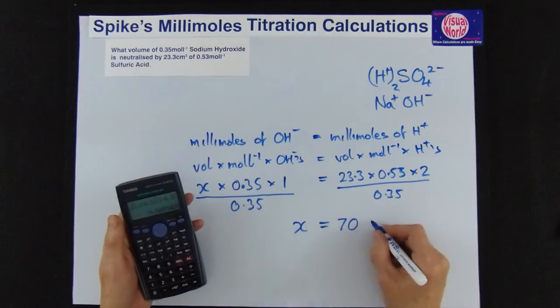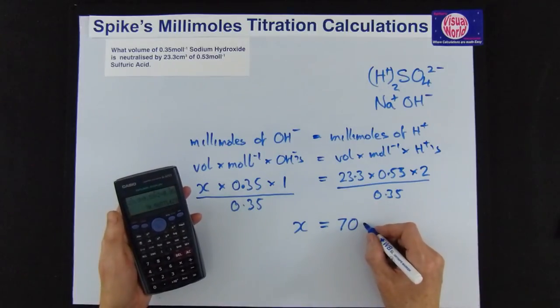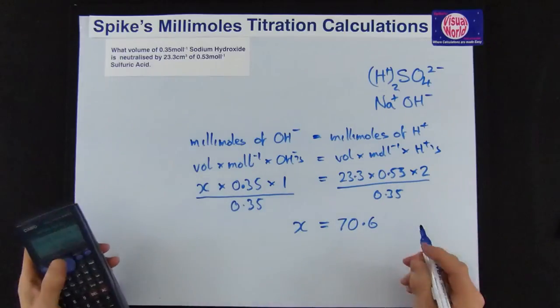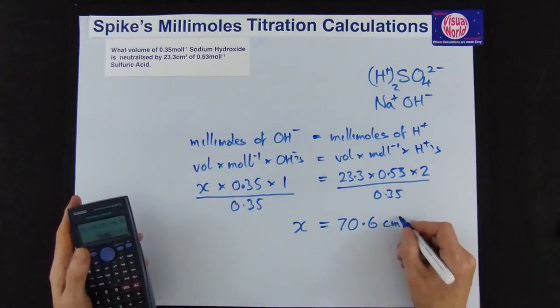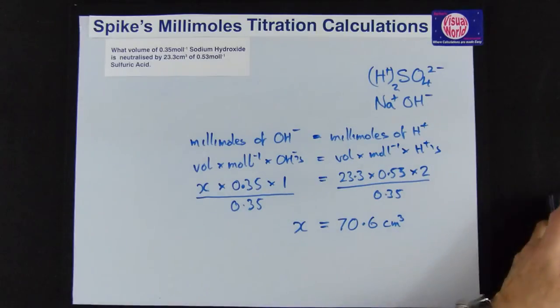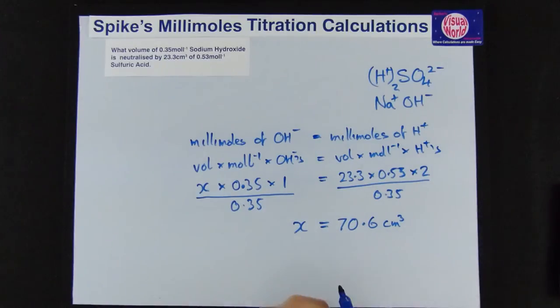So if you want to keep it to one decimal place then you get 70.6 and that is the volume so that's in centimeters cubed. And that's how easy it is to use. There's no complications. It's really easy to use the millimoles method.